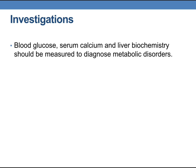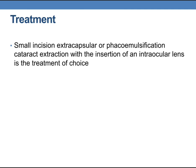Regarding investigations: fasting blood glucose, serum calcium, and liver biochemistry should be measured to diagnose metabolic disorders that may have led to cataract formation. Treatment options include small incision extracapsular surgery or phacoemulsification. Cataract extraction with the insertion of an intraocular lens is the treatment of choice.